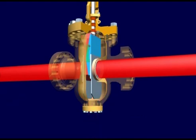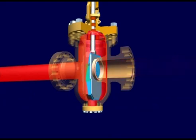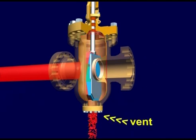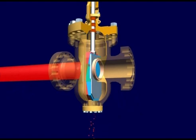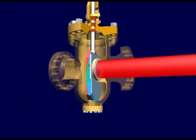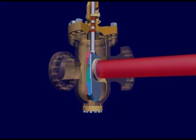For the same reason, infiltration of solid particles is stopped by the mechanical seal between the gate and the seats. Thanks to the expansion, when in a closed position, the gate guarantees a double seal both on the upstream and downstream side, regardless of the presence of pressure in the line.